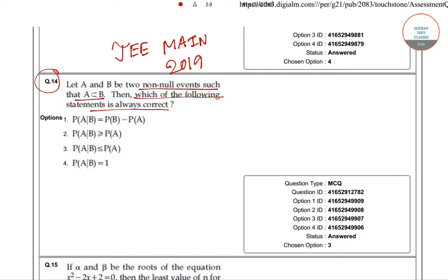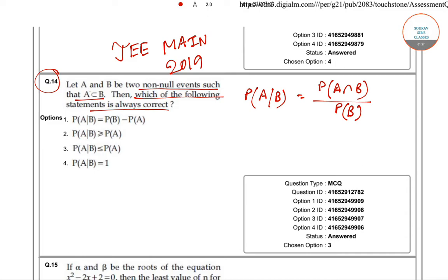If A is a subset of B, then P(A|B) will be P(A∩B) divided by P(B). We know that this is the formula of P(A|B). Since A is a subset of B, B is the bigger set and A is the smaller set, so we can write P(A∩B) as P(A), giving us P(A|B) = P(A) / P(B).